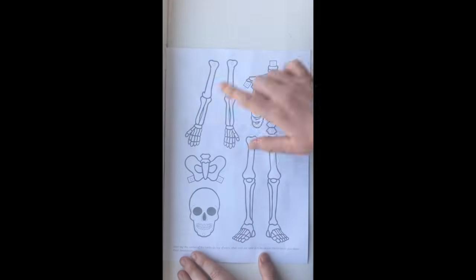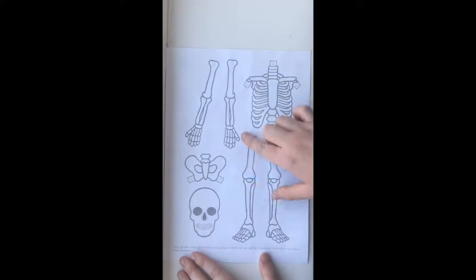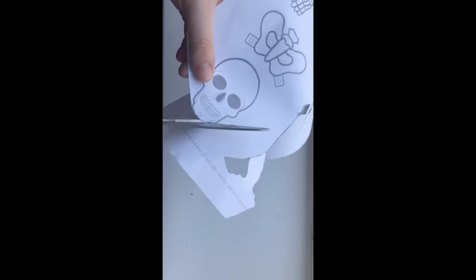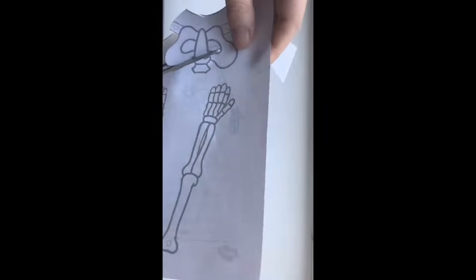This is a fantastic activity to do with children throughout Key Stage 2 to support their learning about the human body in science. This activity involves scissors and split pins, so we recommend parental supervision throughout.